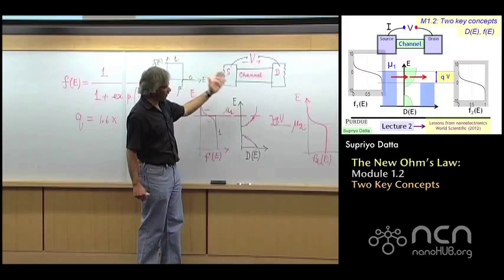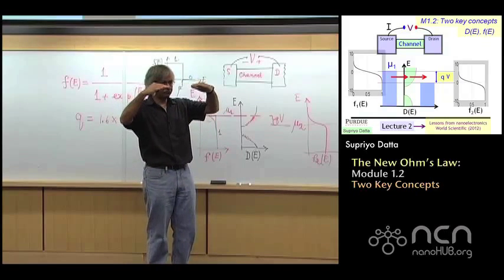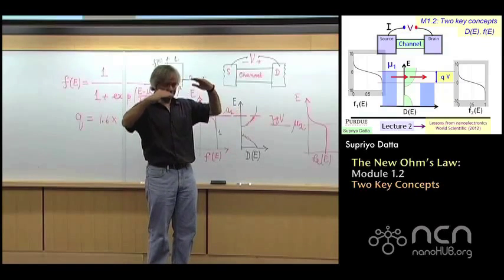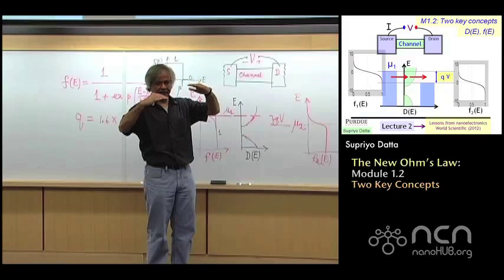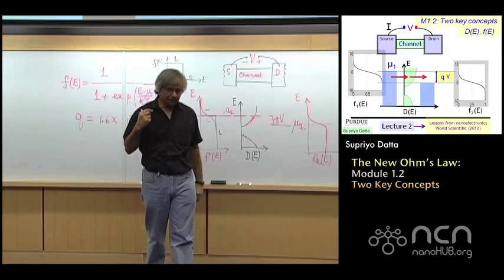And that's when current flows. If the two mu's are the same, then no current will flow. When the two are, when you have applied a voltage and separated them, that's when current can flow. And that's what we'll talk about in the next module.